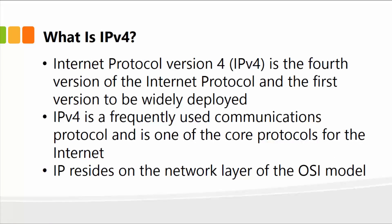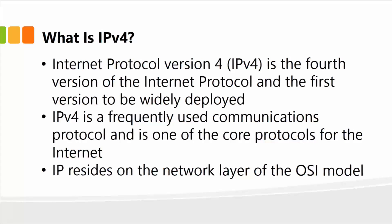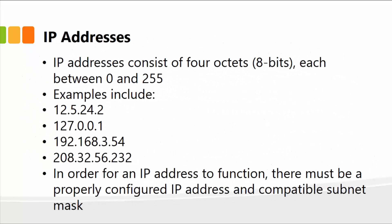So what is IP version 4? It's the internet protocol version 4 — the fourth version of IP and the first to be widely deployed. Even today, 99% of networks being deployed use IPv4. It's a frequently used communications protocol and one of the core protocols for the internet. Importantly, IP resides on the network layer of the OSI model.